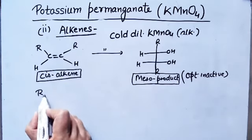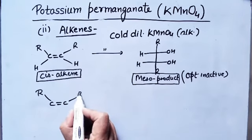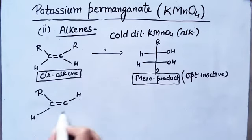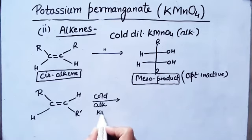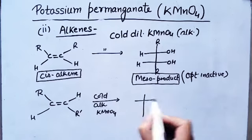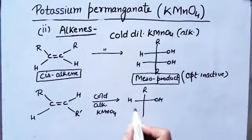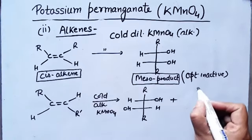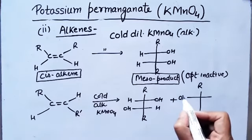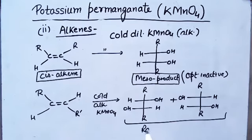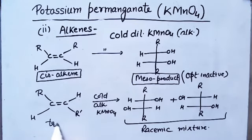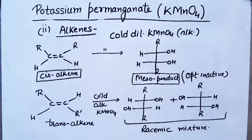While when you take a trans-alkene and use cold alkaline KMnO₄, you will get a racemic mixture. You will not get a meso product; you will get D-form and L-form, or R-form and S-form — a racemic mixture. So remember: cis-alkene gives meso product, and trans-alkene gives racemic mixture.